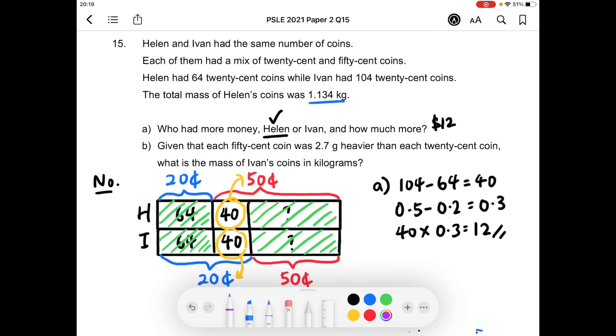Now using the same model, in terms of mass, this part here, where I'm going to circle in purple, have the same mass. Because they are made up of 64, 20 cent coins for both Helen and Ivan. And this part here in purple, also have the same mass. Because they are made up of the same number of 50 cent coins.